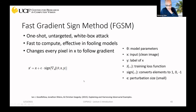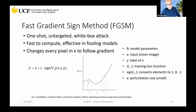In FGSM, theta is the model parameter, X is the clean input image, Y is the label of X, J is the training loss function, and the sign function converts the gradient to +1, -1, or 0. The perturbation is epsilon times the sign of the gradient. Graphically: if we are at a point on the loss function curve and we want the loss to increase (causing wrong classification), we find the direction and add epsilon in that direction to X to get the perturbed image.